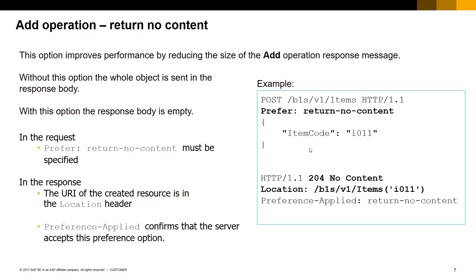There is an option in the service layer to return an empty body in the response. To set this option in the add operation request header, you specify the preferred key with the value return no content. With this option, only the key details of the newly added entity will be returned as a path in the response header with a key called location.